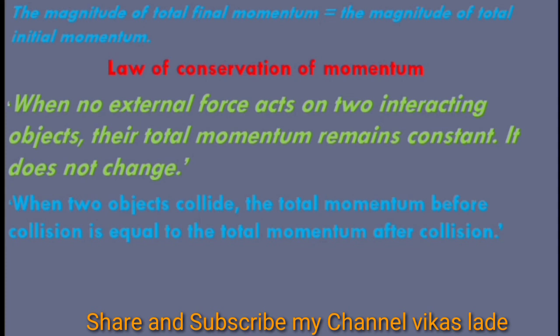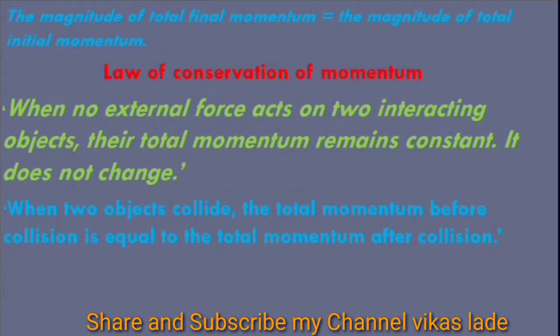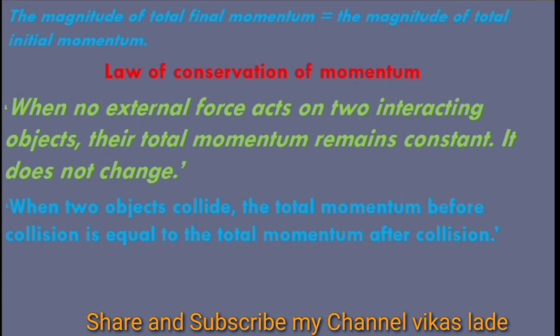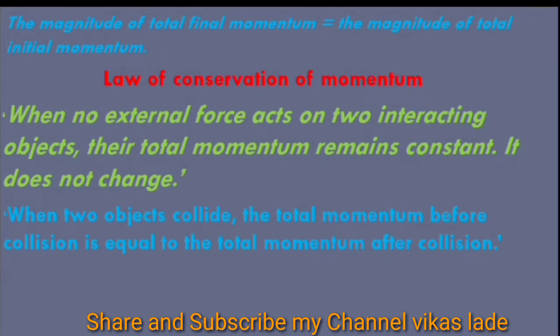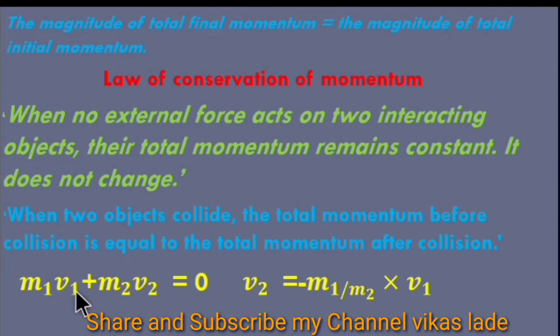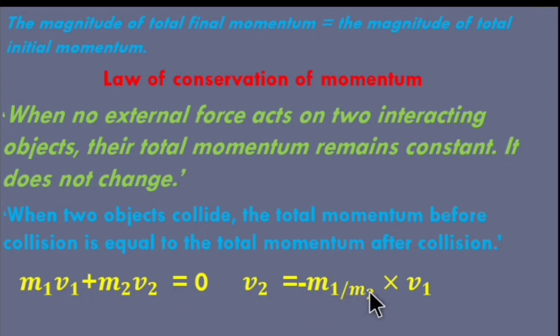In order to understand this principle, let us consider the example of a bullet fired from a gun. When a bullet of mass M1 is fired from the gun of mass M2, its velocity becomes V1 and its momentum becomes M1V1. Before firing the gun, both the gun and the bullet are at rest, and hence the total initial momentum is zero. According to the above law, the total final momentum also has to be zero. Thus, the forward-moving bullet causes the gun to move backward after firing. This backward motion of the gun is called recoil. The velocity of recoil V2 is such that M1V1 plus M2V2 equals zero, or V2 equals minus M1 upon M2 into V1.